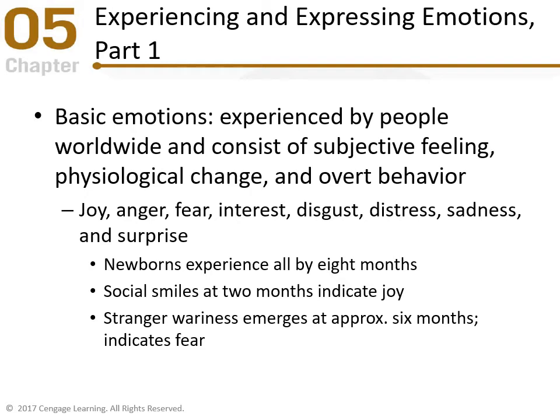Social smiles at two months indicate joy — it's not just gas anymore; on average, the social smile is about two months. Stranger wariness, which we remember as stranger danger, emerges at approximately six months and indicates fear — that's when they realize the stranger is different from their primary caregiver. Older infants show anger when attempts to achieve a goal are frustrated — they get upset when they can't get a toy or when a toy doesn't work the way it should.